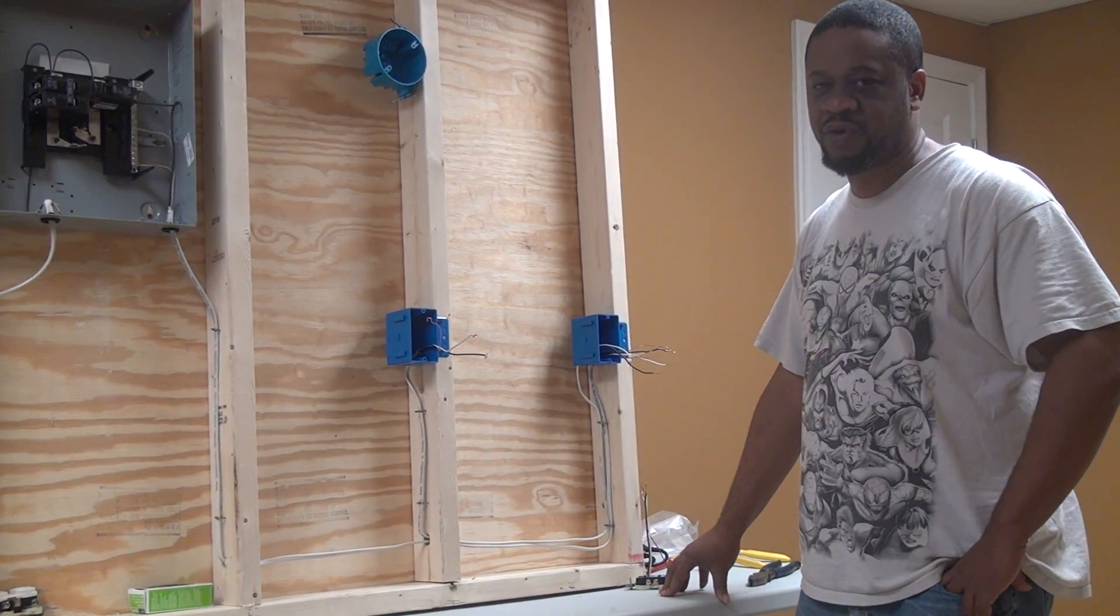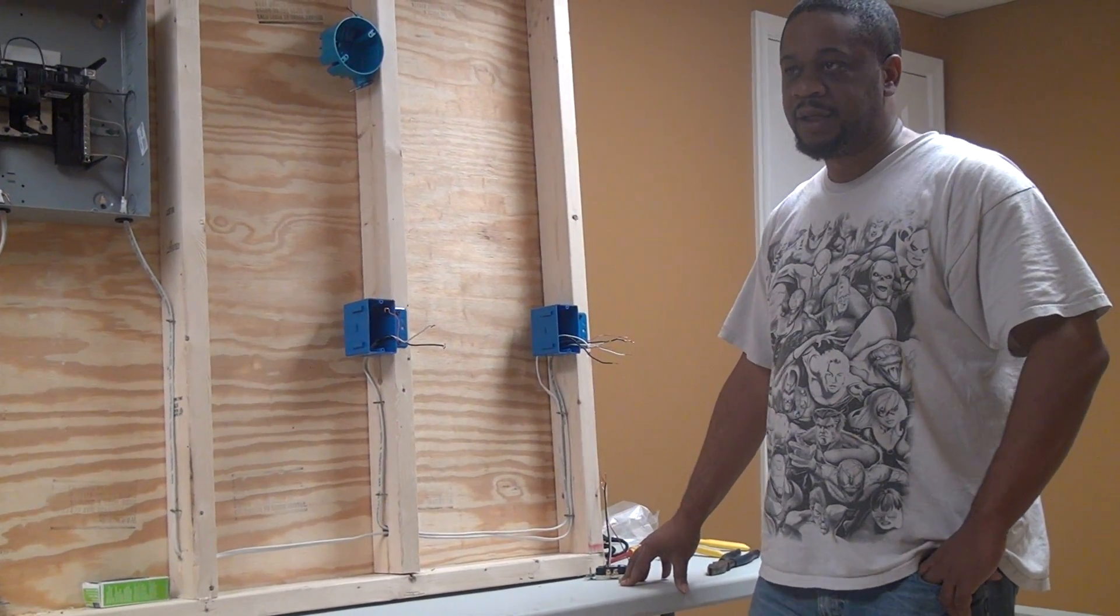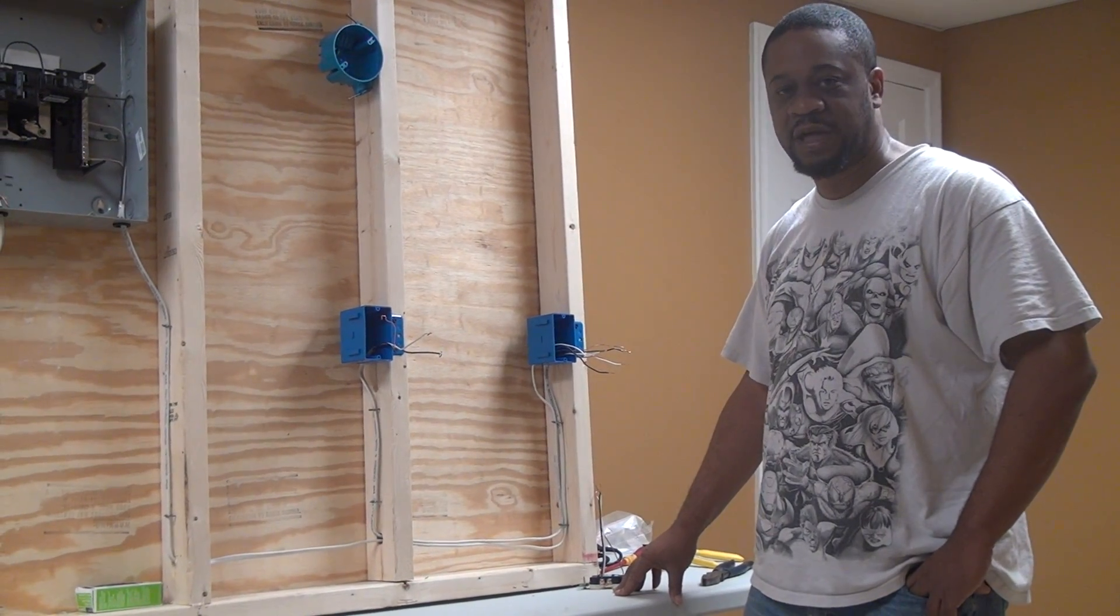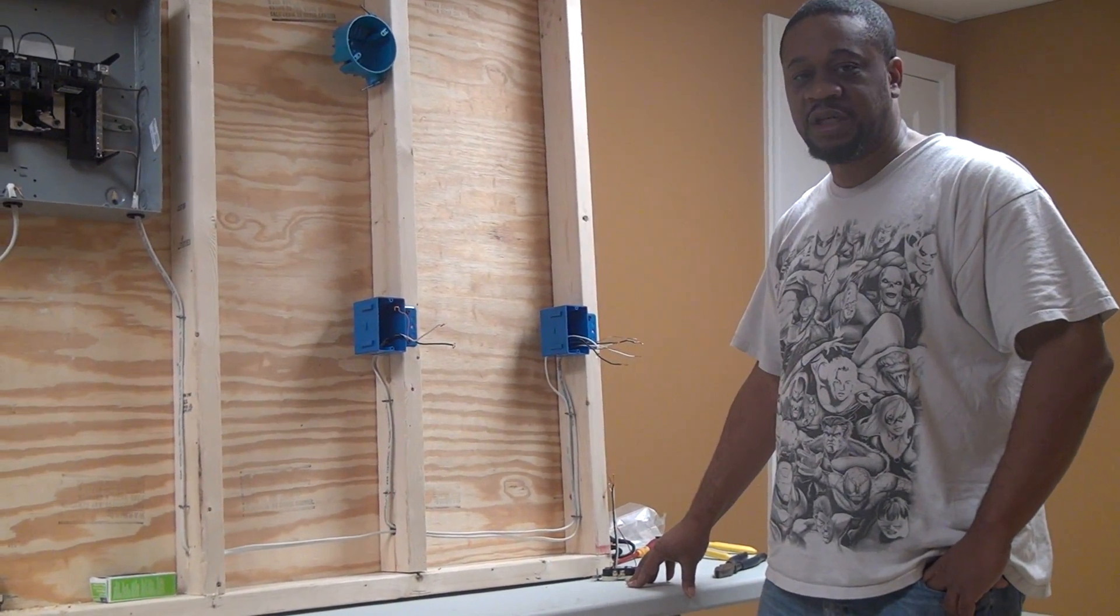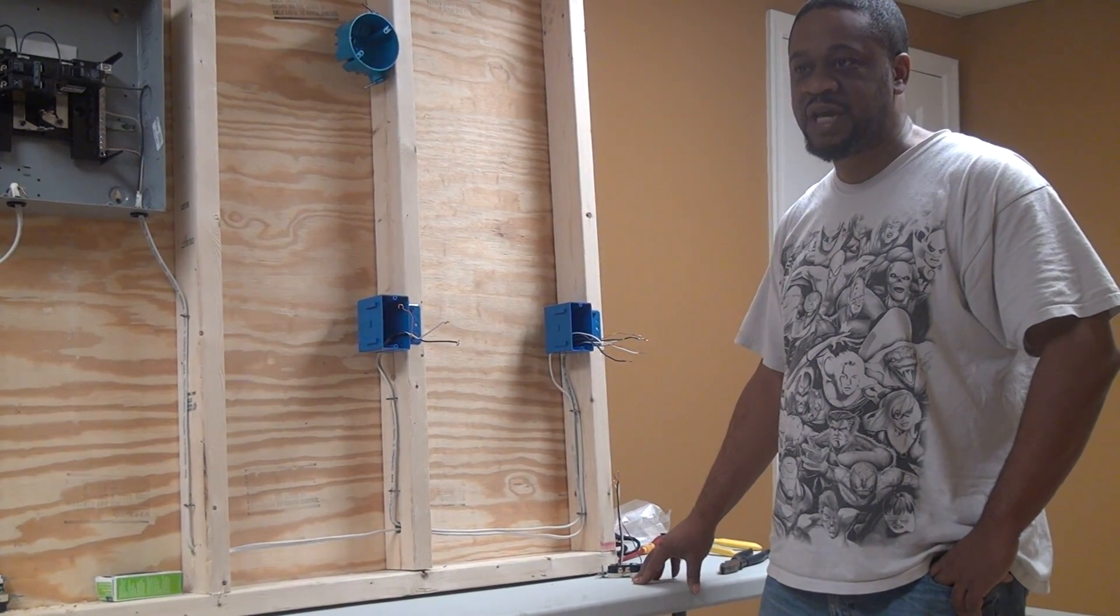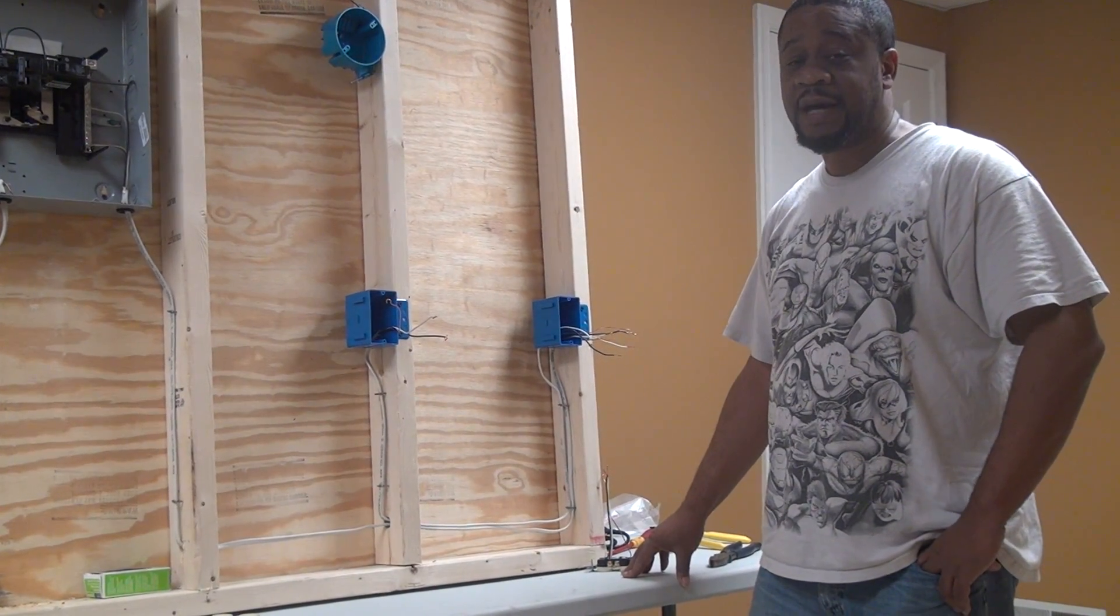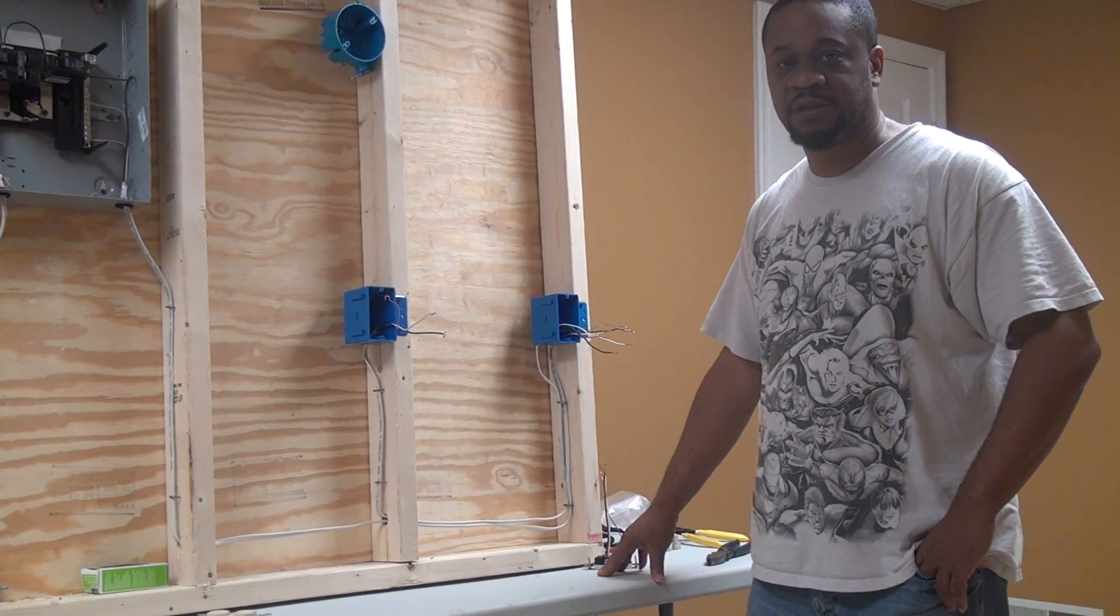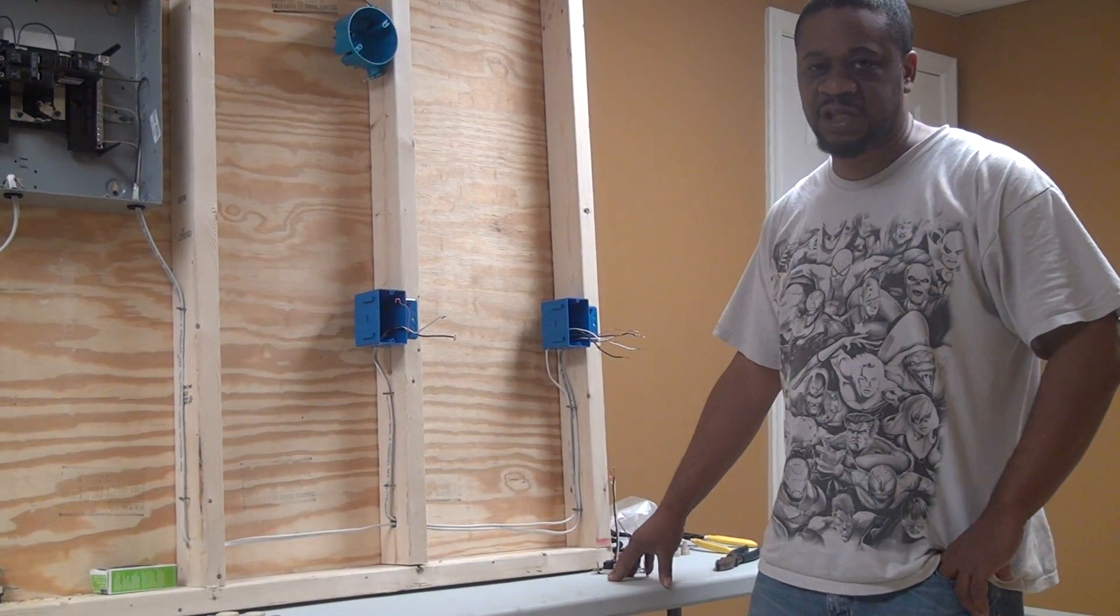The code also has a requirement for the number of outlets to be installed along a wall line. The code has a really bad way of telling you to space your outlets 12 feet apart. What it says is that when you measure anywhere horizontally along the wall line within six feet, you should have an outlet. All that means basically is put them 12 feet apart. I would suggest putting them a little closer together.